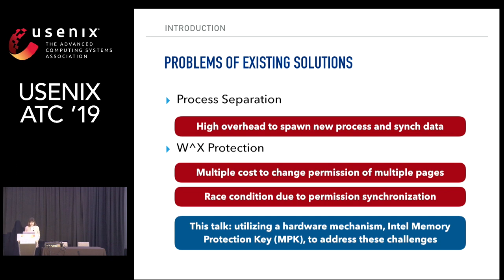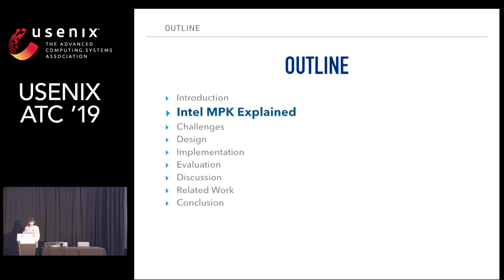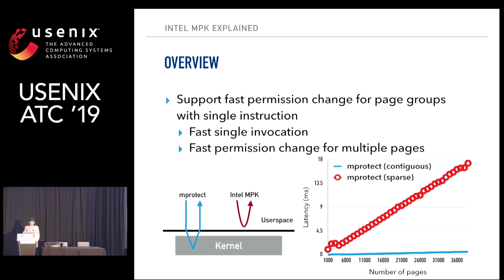In this talk, we utilize a hardware mechanism, Intel Memory Protection Key, to address these challenges. Memory Protection Key is a hardware feature to support fast permission change for page groups with a single instruction. It provides fast single invocation — for example, MProtect is a system call which requires a transition between user space and kernel space because MProtect needs to change the page table in kernel space.